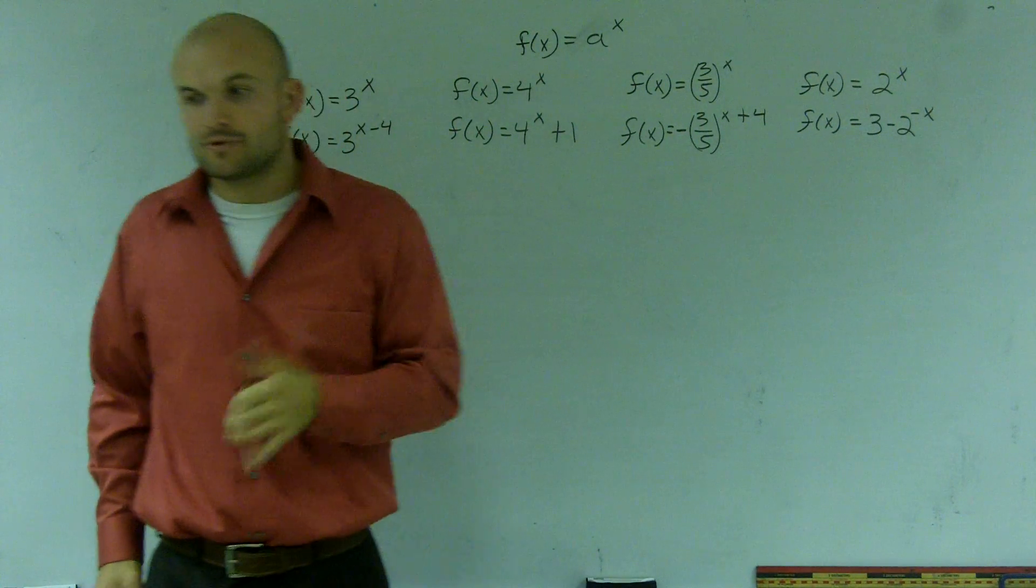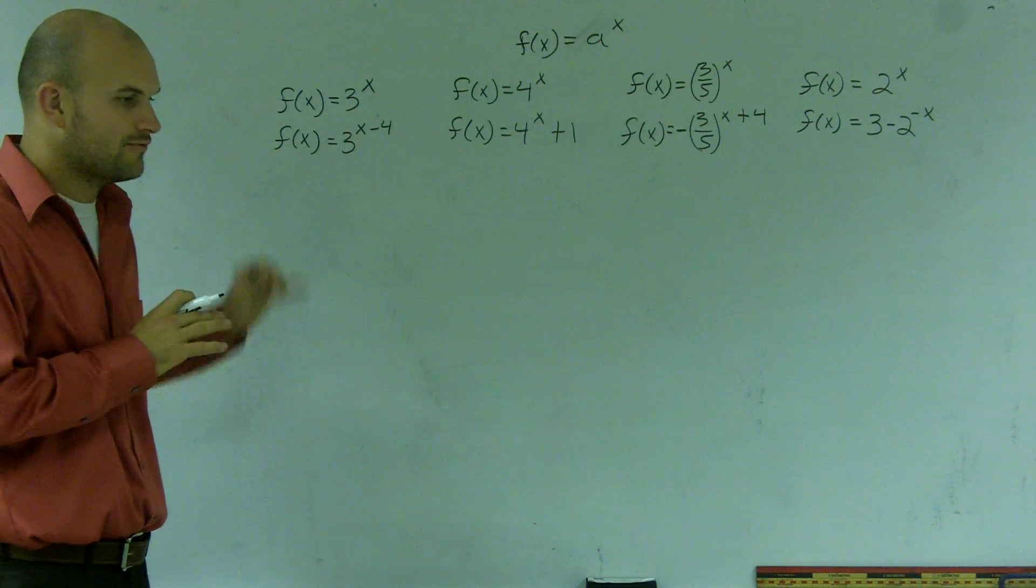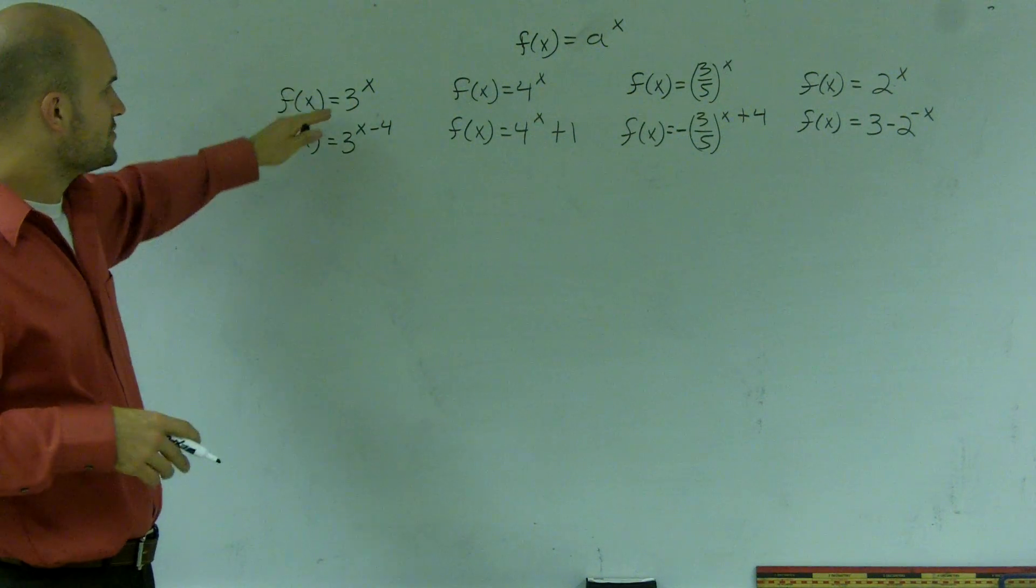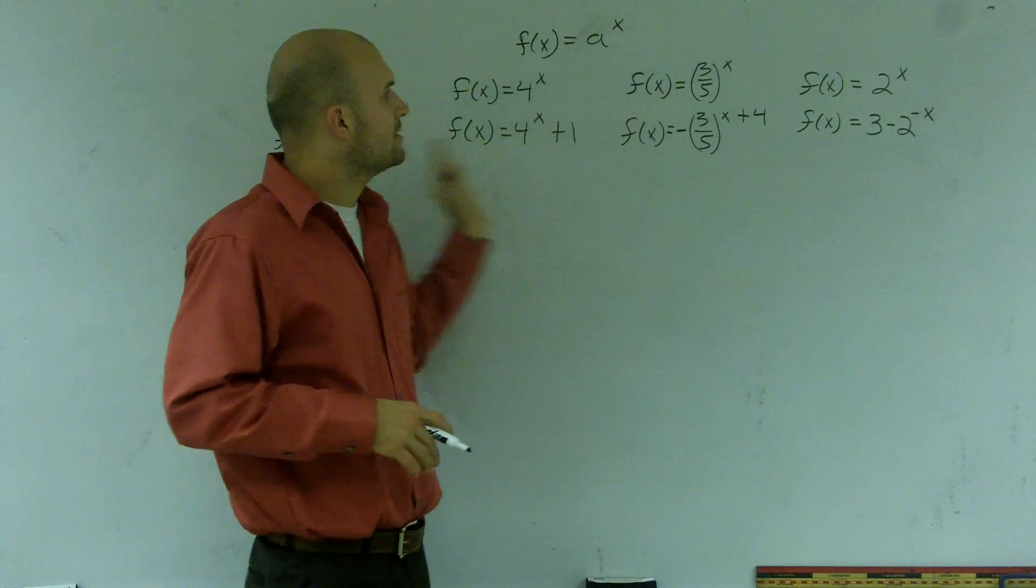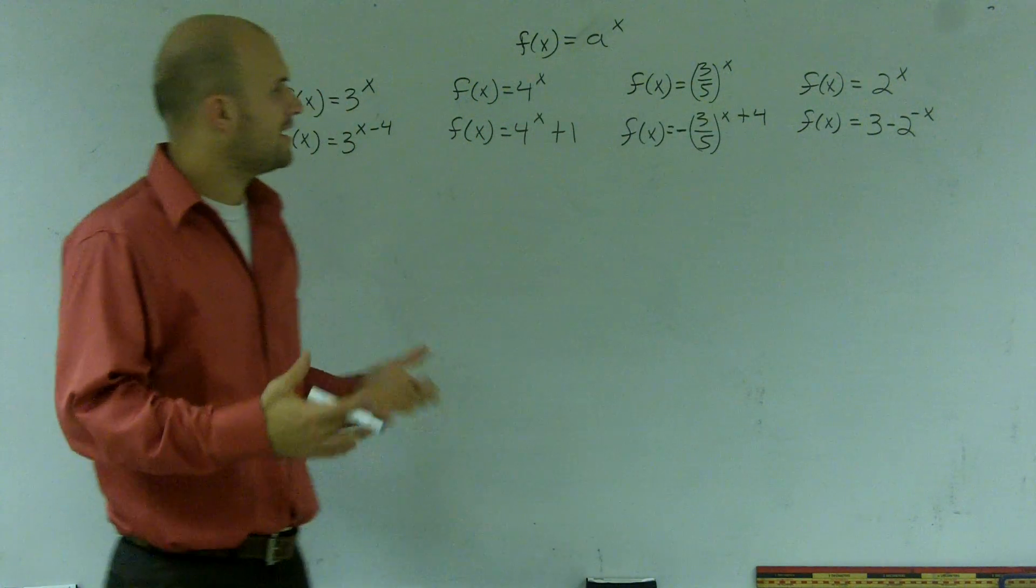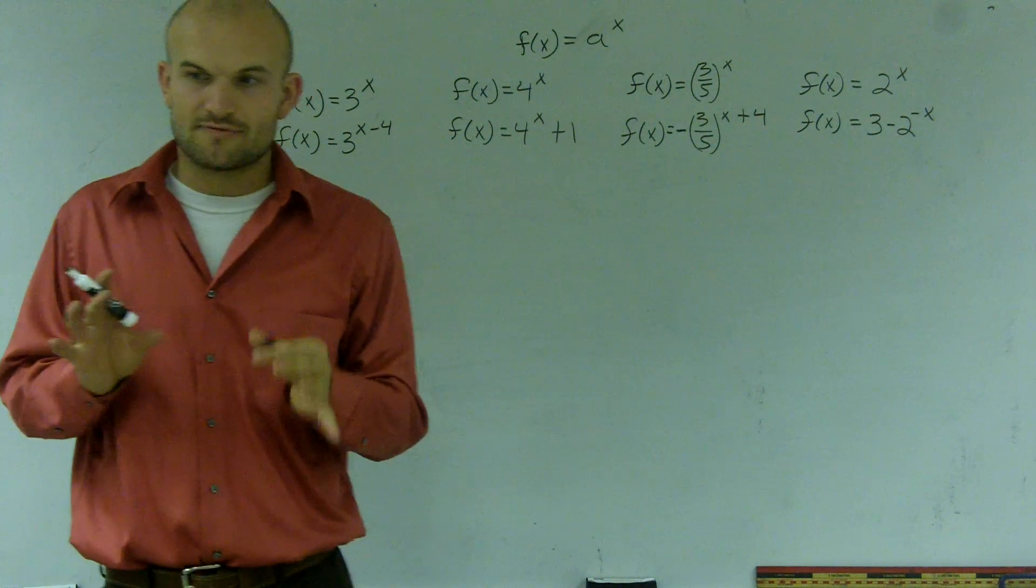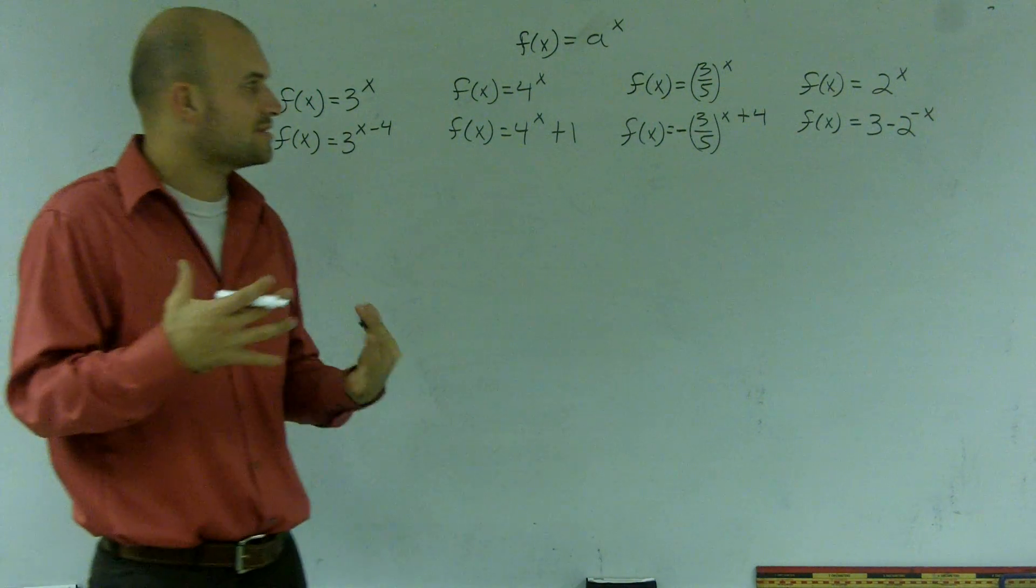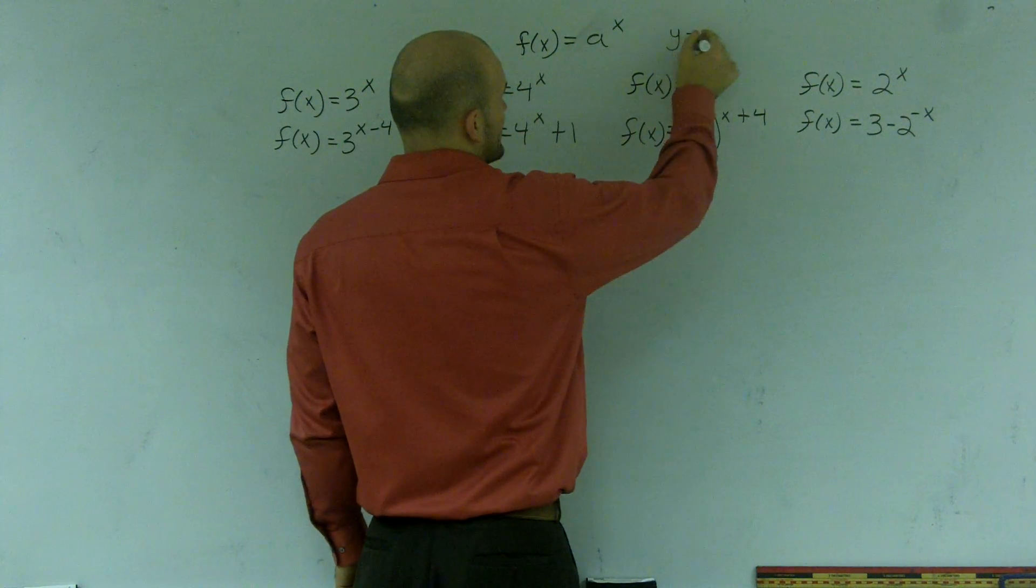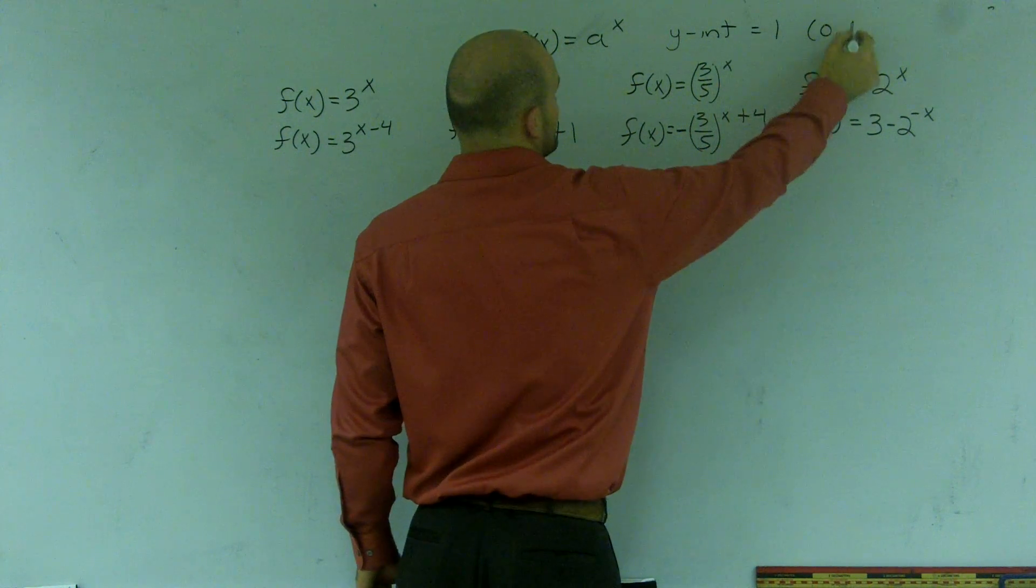So here we have a set of four functions, and then I have a transformation from the original parent function. And what you notice is these all have a different base. Here are the bases 3, 4, 3/5, and 2. The reason why I showed you different bases is it's not going to really affect your transformation as much. You're still going to have essentially pretty much the same graph. They are going to alter a little bit, but a couple things will always remain the same. Your y-intercept is always going to be equal to 1, or what we write as the point (0,1).